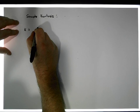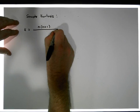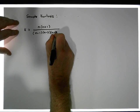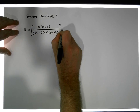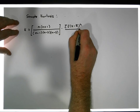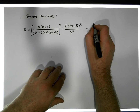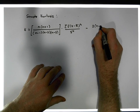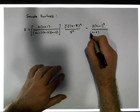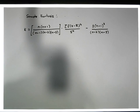The formula is: k equals n times (n plus one), divided by (n minus one) times (n minus two) times (n minus three). That factor is multiplied by the sum of the frequencies times (x minus x-bar) to the power of four, divided by the standard deviation to the power of four, minus three times (n minus one) squared, divided by (n minus two) times (n minus three).